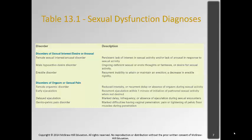There are also disorders of orgasm or sexual pain. Female orgasmic disorder is where women have reduced intensity or delay in orgasm, or cannot have orgasm at all — again, causing significant distress. Early or premature ejaculation is where recurrent ejaculation happens within one minute of initiation of sexual activity. Delayed ejaculation is where the male cannot ejaculate or it's marked by long delays. And genitopelvic pain disorder involves significant pain upon vaginal penetration or tightening of the pelvic floor during penetration.